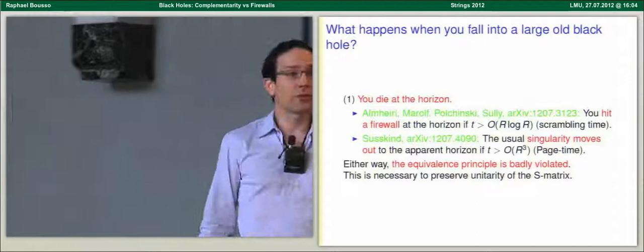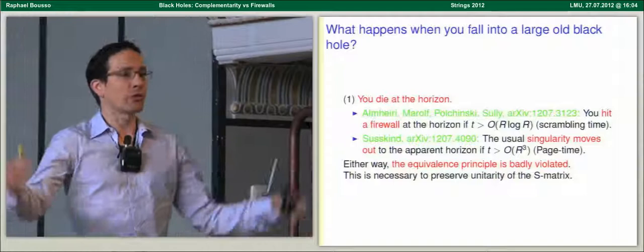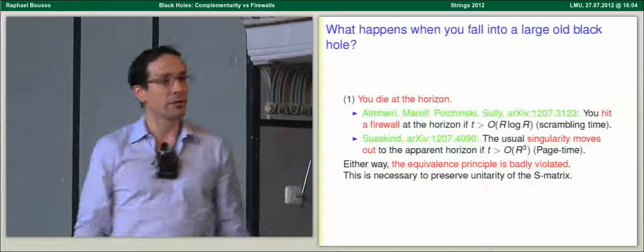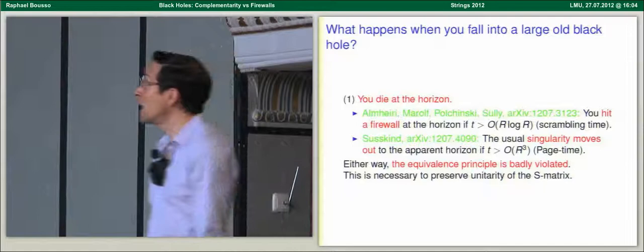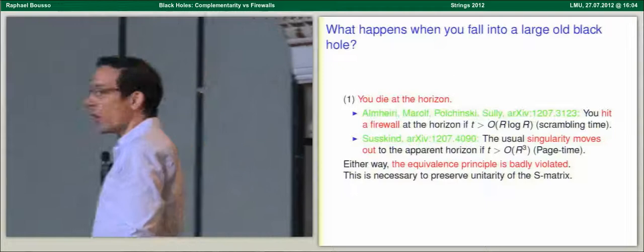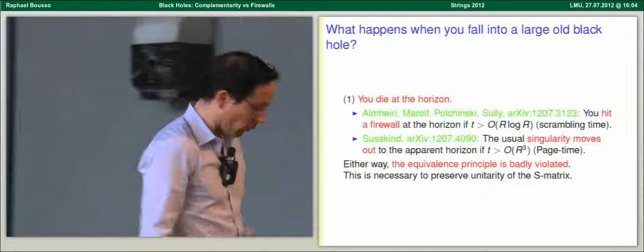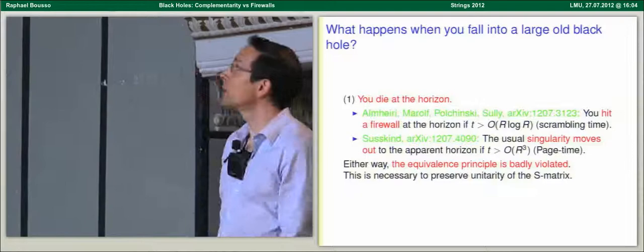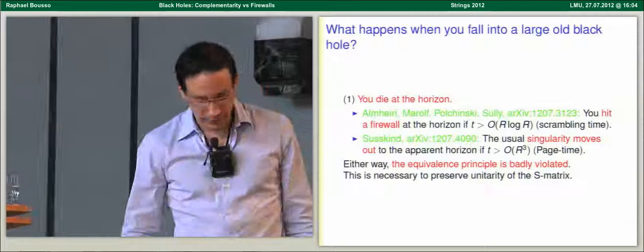What happens when you fall into a large old black hole? I'm going to make the black hole large so that the horizon scale is very large compared to the observer who falls in, so that we can apply the equivalence principle — things should be like flat space at the horizon. The reason it has to be old is a technical reason I'll come back to, but it doesn't diminish the importance of the question. There are, just as there were 20 years ago, two proposed answers.